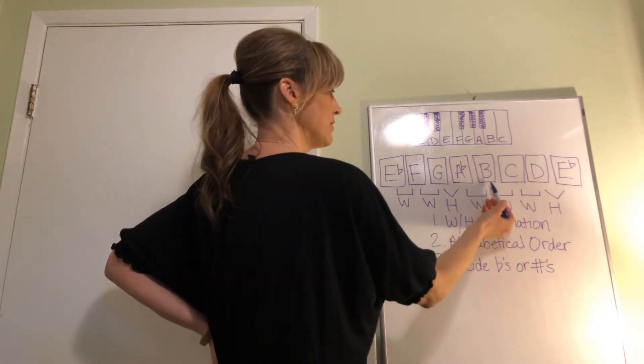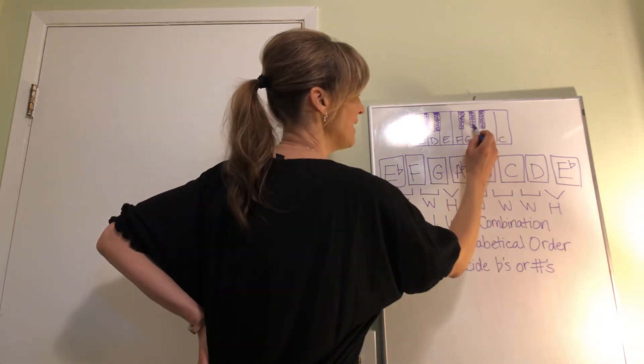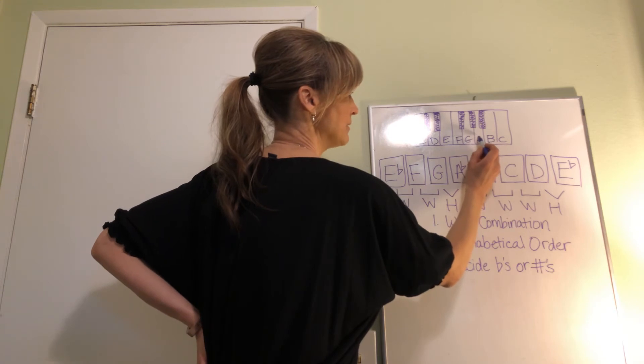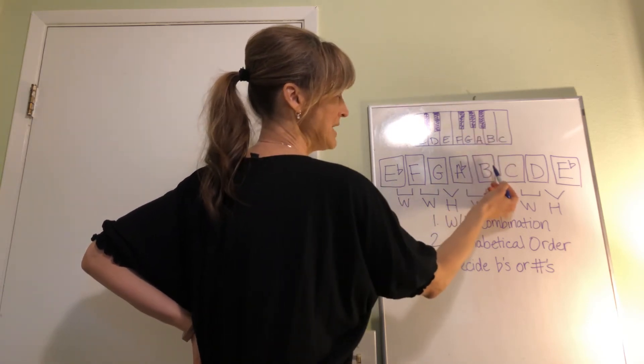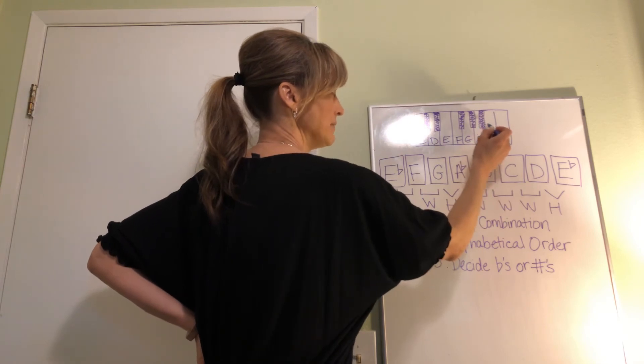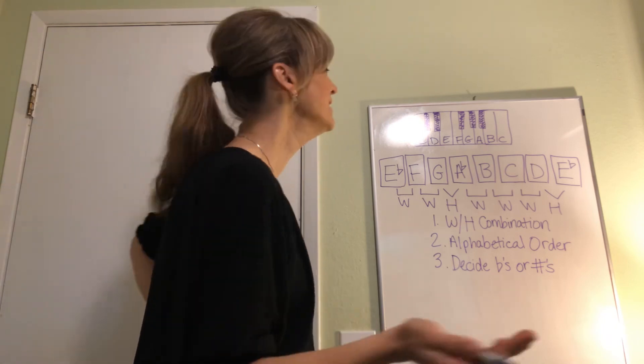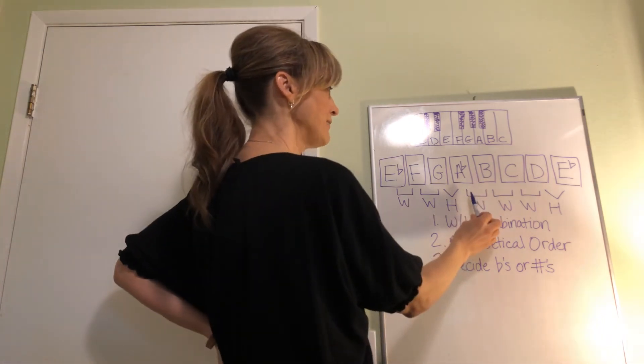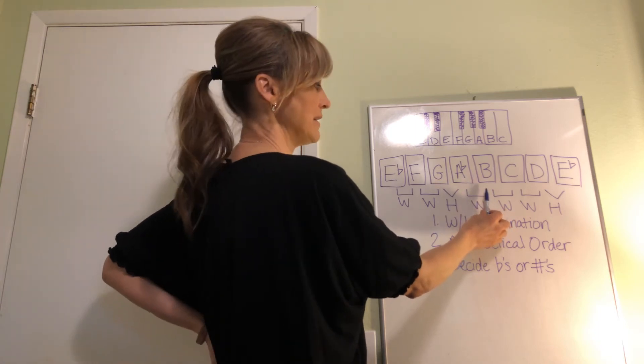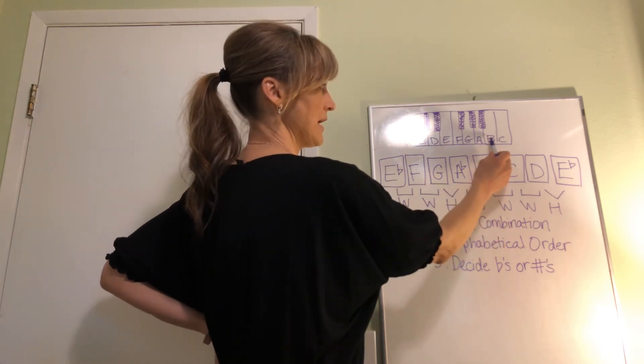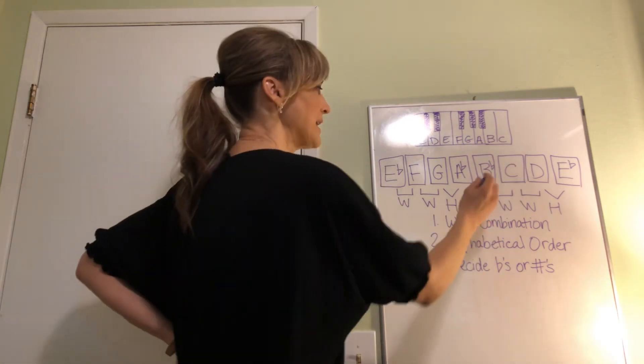A-flat going to B - is that a whole step? Let's see. Here's our A-flat. A-flat to A is a half step. A to this black key is another half step. We haven't even gotten to B yet. And then to B is another half step. Three half steps. That's a whole and a half. So A-flat to B is more than a whole step. We have to narrow it down and make it a whole step again. So we have to bring it to B-flat.